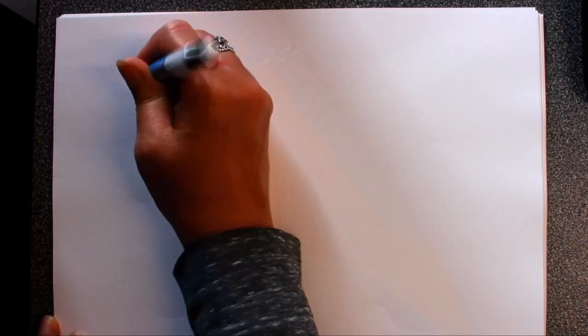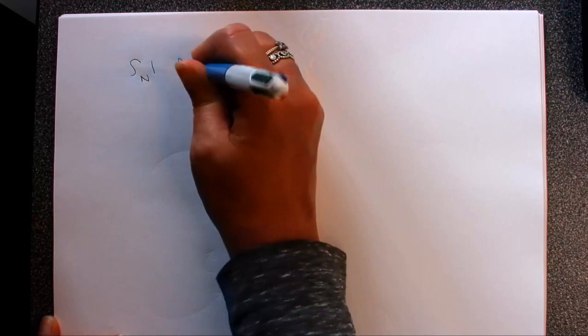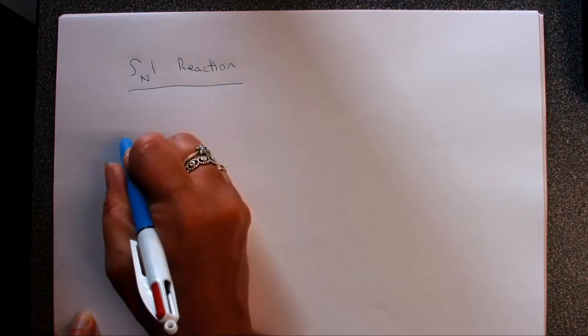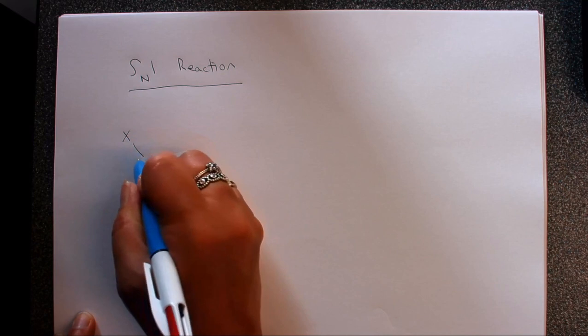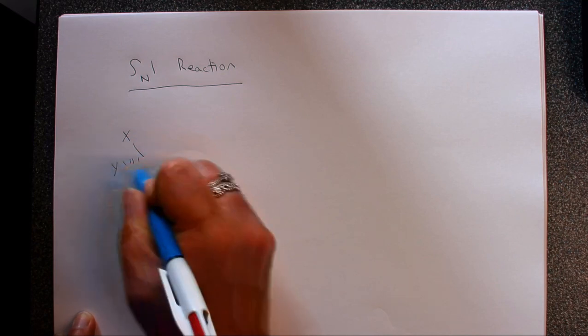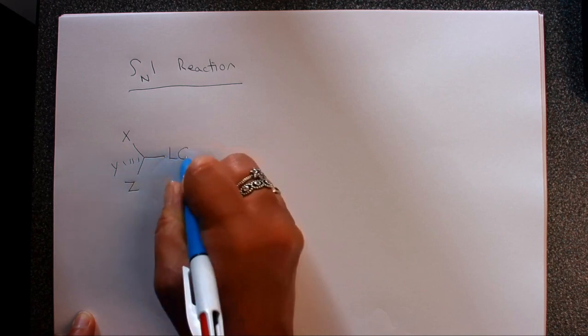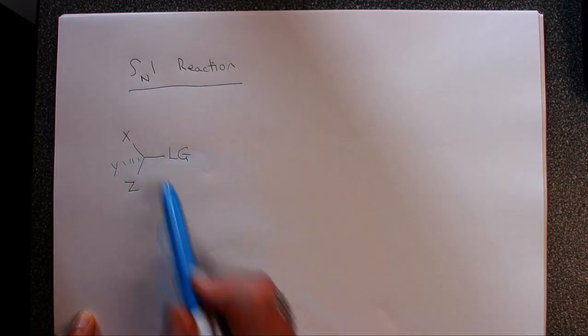So what I'm going to do here is just talk you through again the generic SN1 reaction. You have it on your slides, but sometimes it's easier if you see it drawn out in real time. We've got a substrate, a molecule which is going to do the reaction. Because it's generic, that means it could apply to any example, so we're not actually going to stipulate what our X, Y, Z are or what our leaving group is.